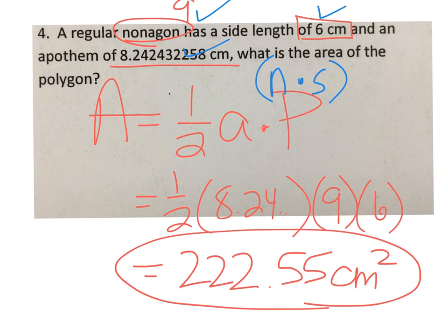Okay, it's important to know that the perimeter is found by having the number of sides of your polygon times the side length.